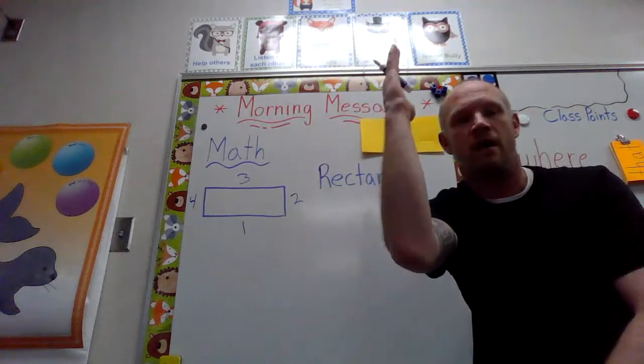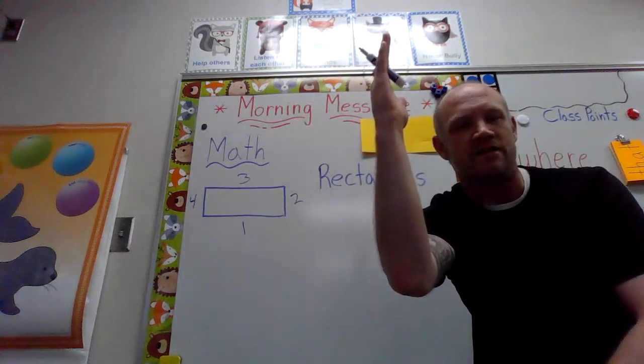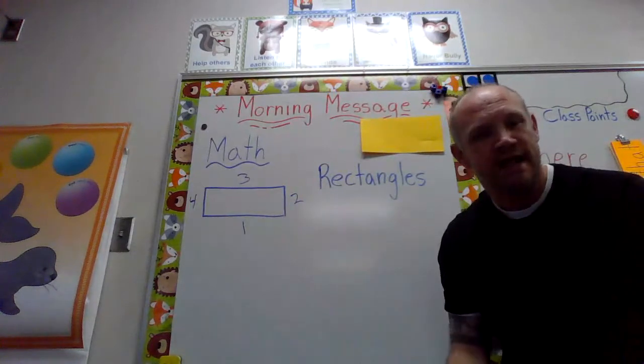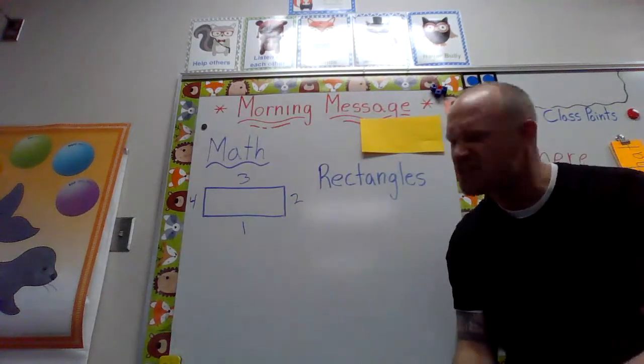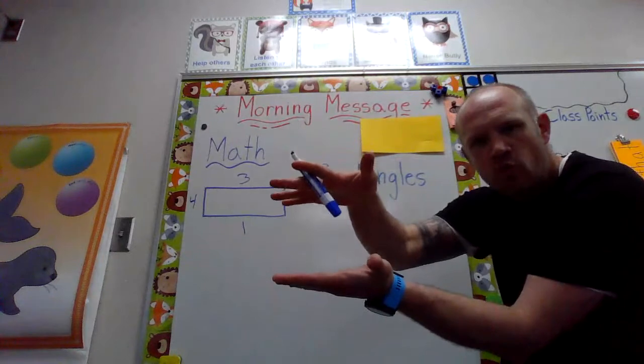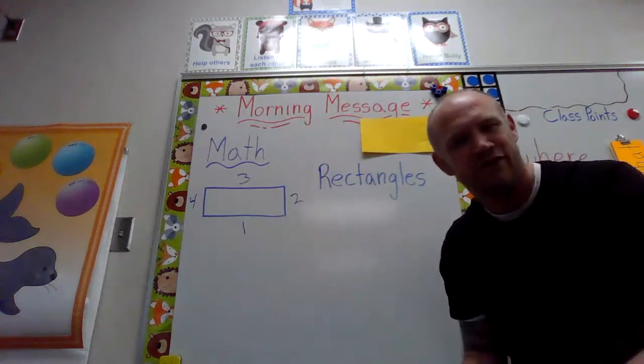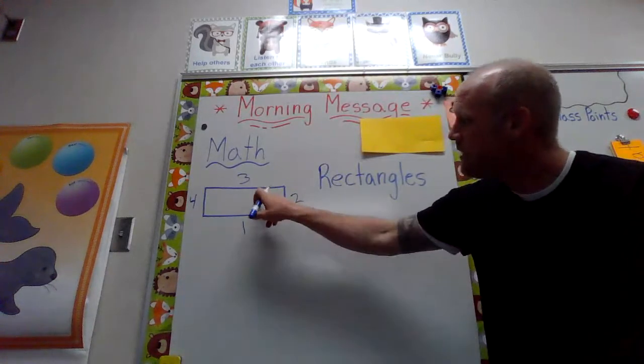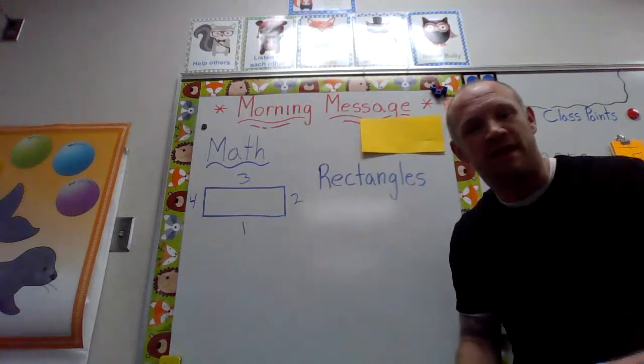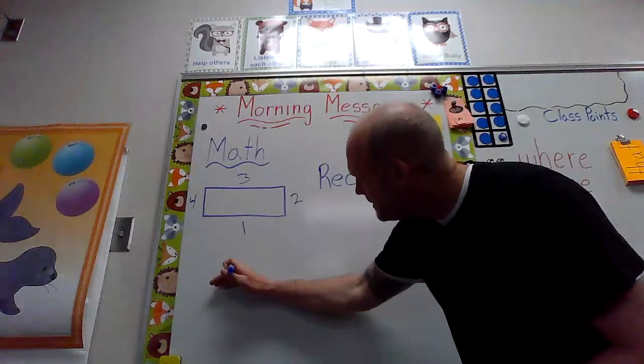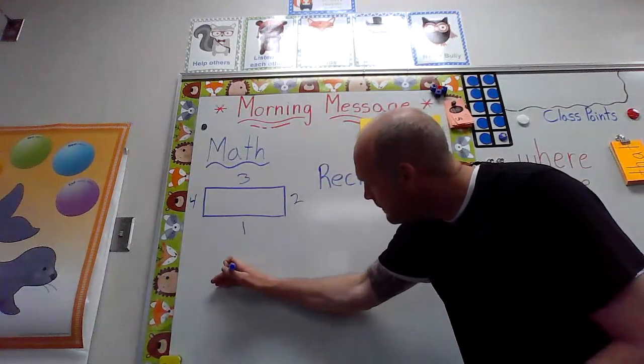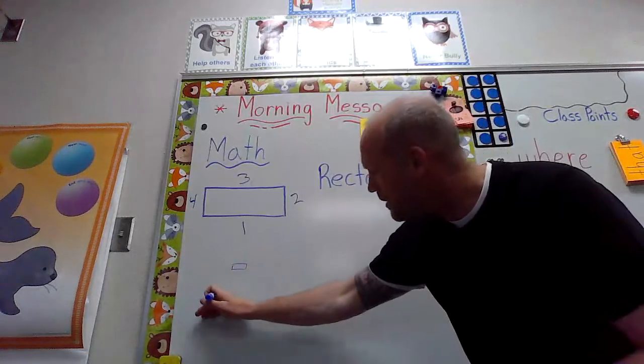So the sides across from each other are the same in the rectangle, so it's kind of like a square squished down. Good job! Now just like a square and all the other shapes we talked about, these rectangles can be different sizes. They can be tiny little rectangles or they can be huge rectangles.